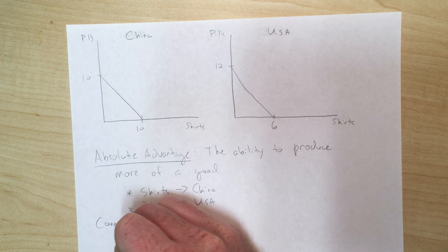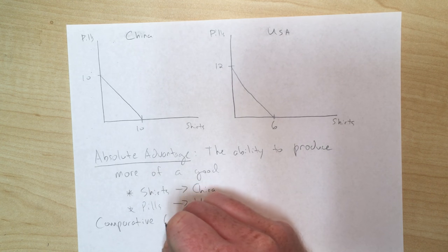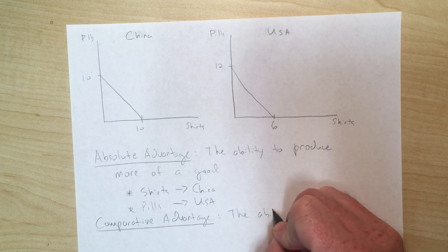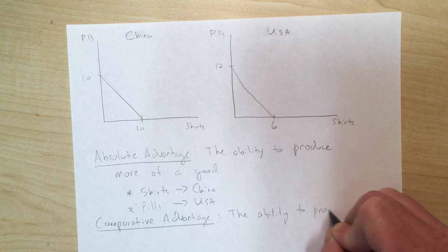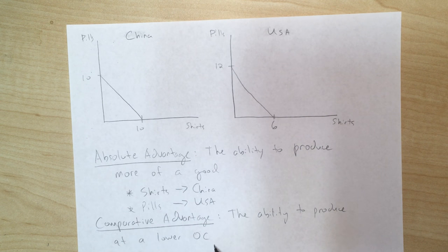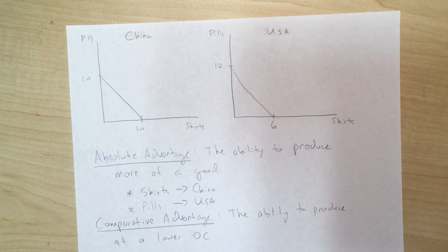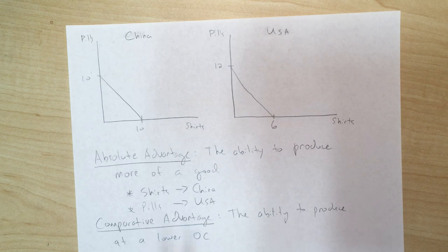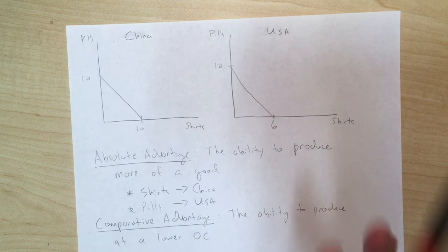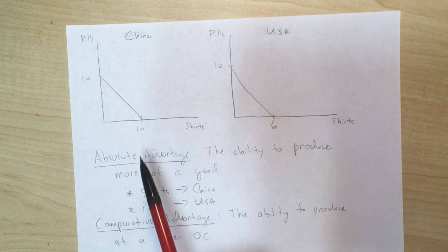The other form of advantage is actually the more important one: comparative advantage. Comparative advantage is the ability to produce at a lower opportunity cost. Opportunity cost is what you have to give up to produce something, so a low cost is a good thing. The country that can produce at a lower opportunity cost has a relative capability of producing that good.